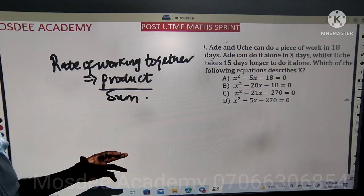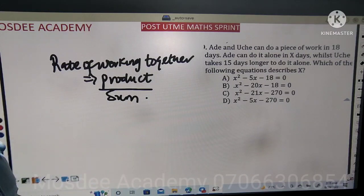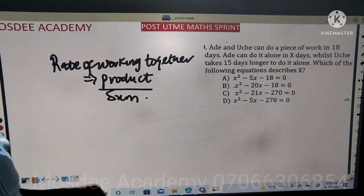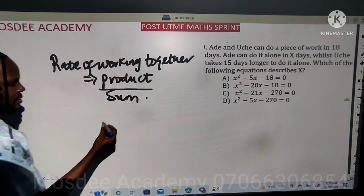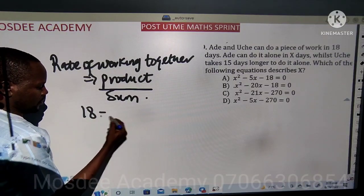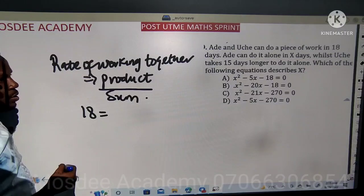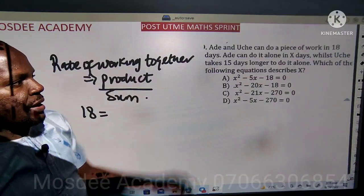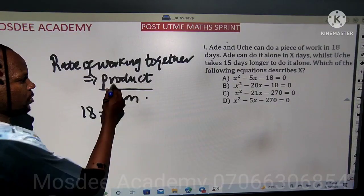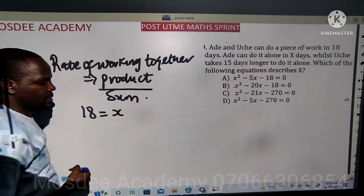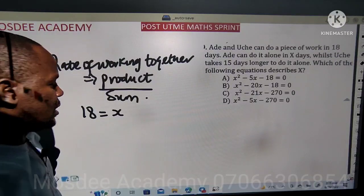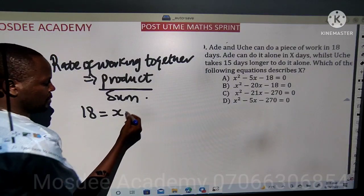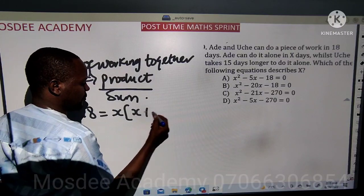There are two people, Ade and Uche. Two of them can do a piece of work. Ade can do a piece of work alone — the total rate of them working together is 18. Ade can do it alone in x days, so x is Ade. While Uche can take 15 days longer, so Uche will be x plus 15.